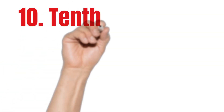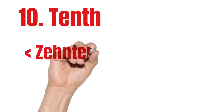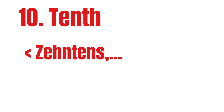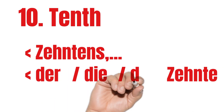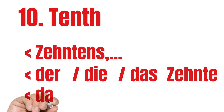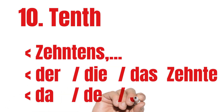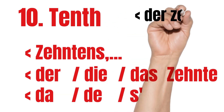Tenth. For numbered lists, tenth means Zehntens. If we want to use articles: der Zehnte, die Zehnte, das Zehnte. In Austrian German, we often use der Zehnte, die Zehnte. Taking a look at October, for example, the 10th of October is der Zehnte Oktober.